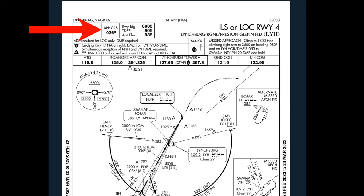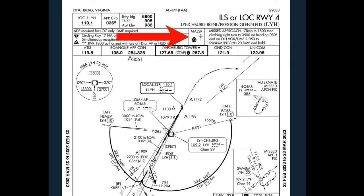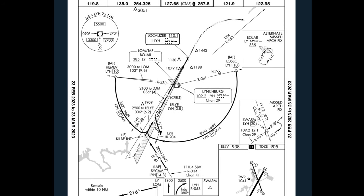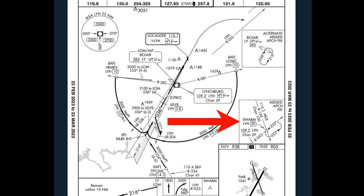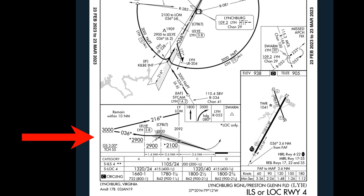We want to know the approach course: 036. We need the touchdown zone and airport elevation, which are at the top of the plate. Review the lighting system you should expect on this ILS approach, the missed approach notes, the bird's eye view with the minimum safe altitude, the holding pattern, the initial approach fixes, and the airport diagram. All your profile view information is down at the bottom.